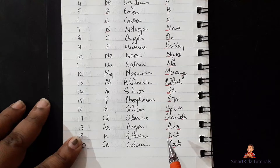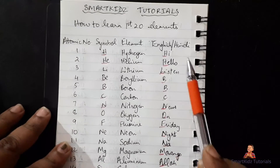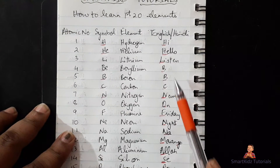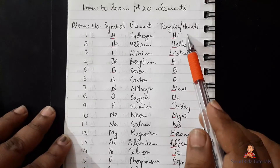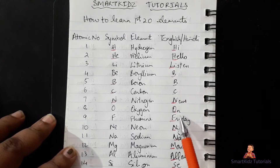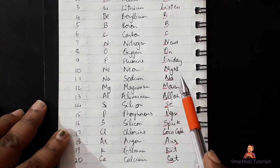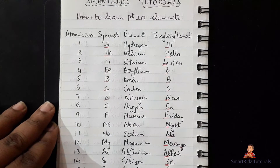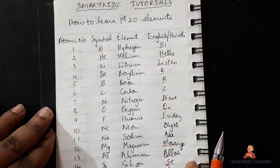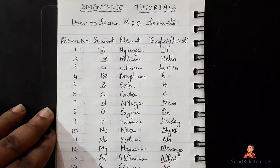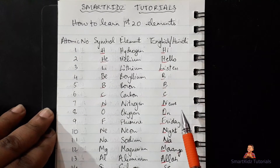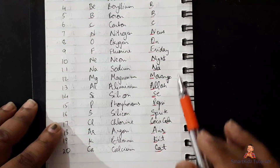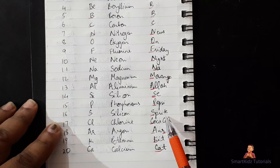So the full English/Hindi mnemonic for all 20 elements is: Hi, Hello, Listen, BBC News On Friday Night — Na, Mango, Allah Say, Pepsi, Sprite, Coca-Cola, or KitKat. Remember: the first part covers elements 1–10 where somebody is asking you to listen to BBC News on Friday night — probably some breaking news, a war, a political problem, or something about an actor or actress. The second part from 11–20 is where you don't ask God for all these things — Na Mango Allah Say Pepsi Sprite Coca-Cola or KitKat.